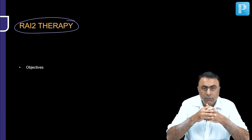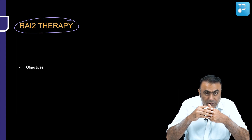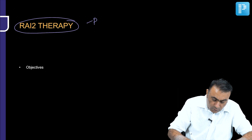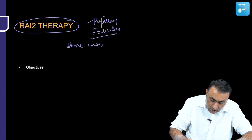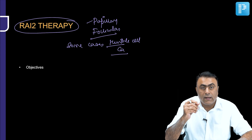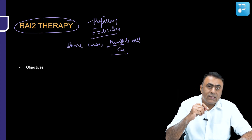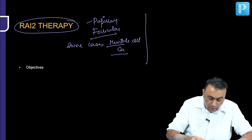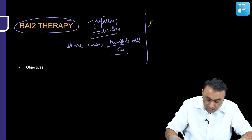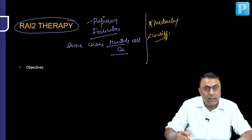Let us understand in which thyroid cancers radioactive iodine therapy is useful. Among the differentiated thyroid cancers, it is useful for papillary thyroid cancers, follicular thyroid cancers, and some cases of Hurthle cell carcinoma — because Hurthle cell carcinoma is much less radioactive iodine avid. There is definitely no role in medullary thyroid cancers or undifferentiated cancers like anaplastic carcinoma.